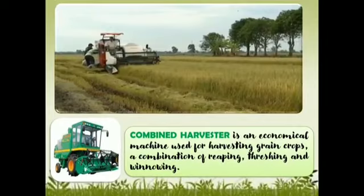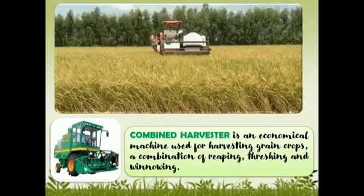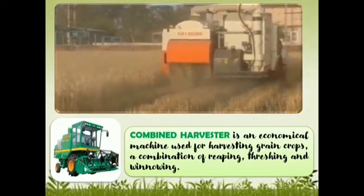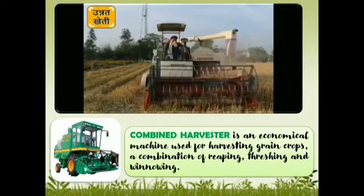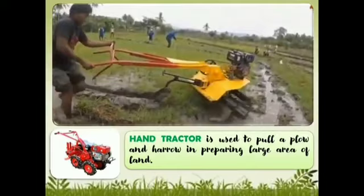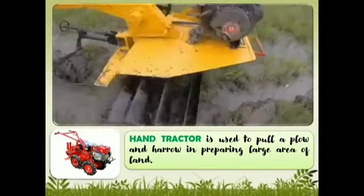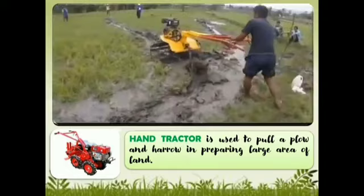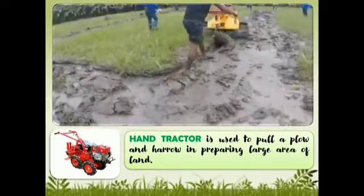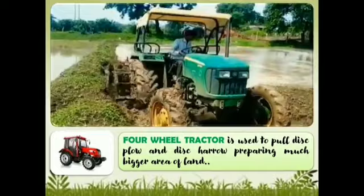Combined harvester is an economical machine used for harvesting grain crops, a combination of reaping, threshing, and winnowing. Hand tractor. It is used to pull a plow and harrow in preparing large areas of land. Four-wheel tractor. It is used to pull the plow and harrow, preparing much bigger areas of land.